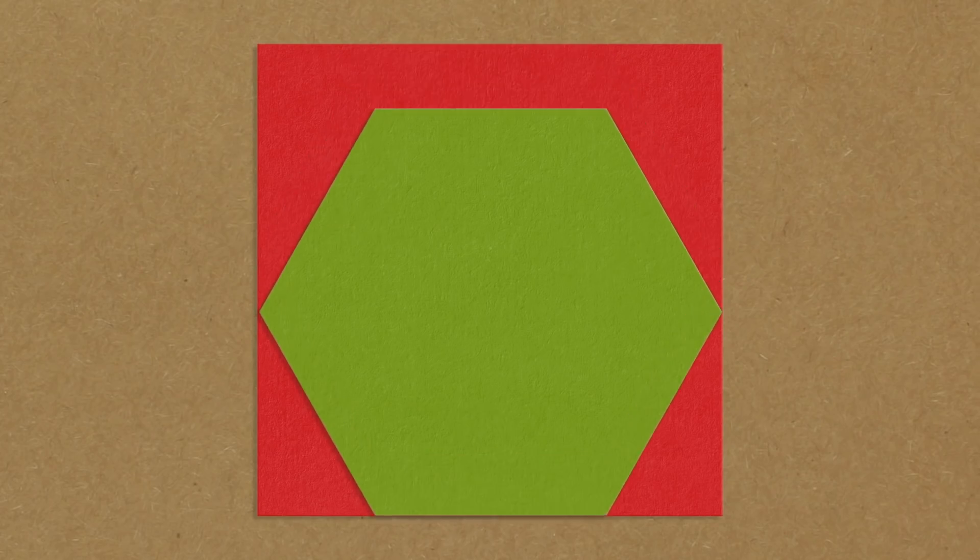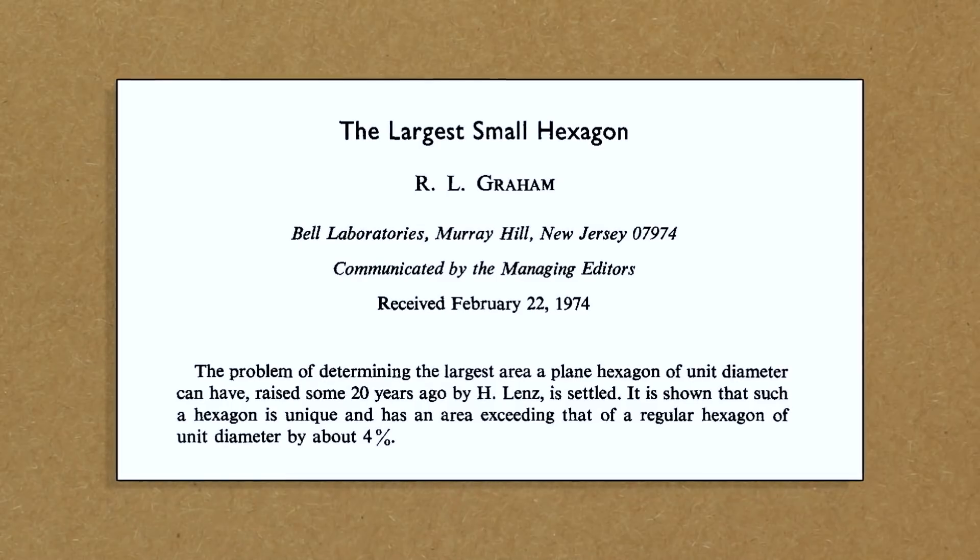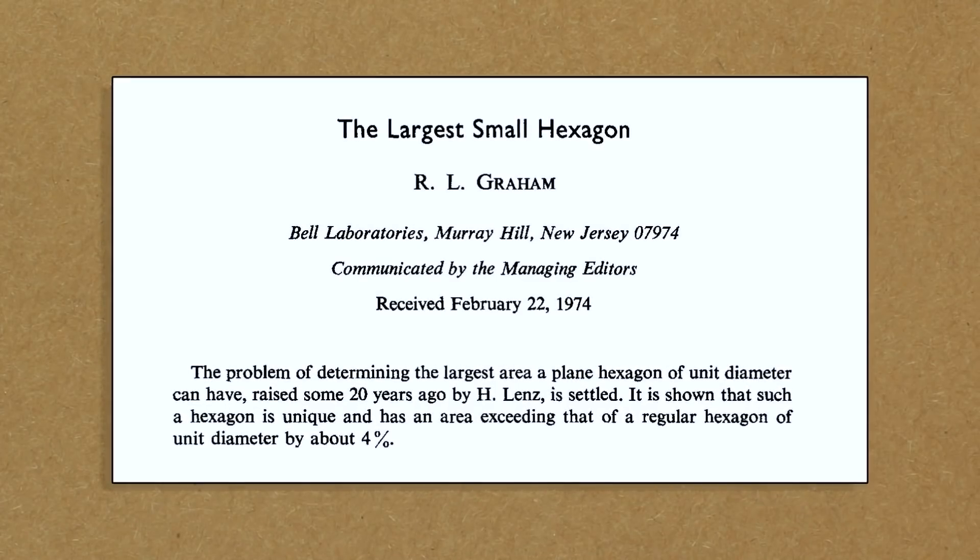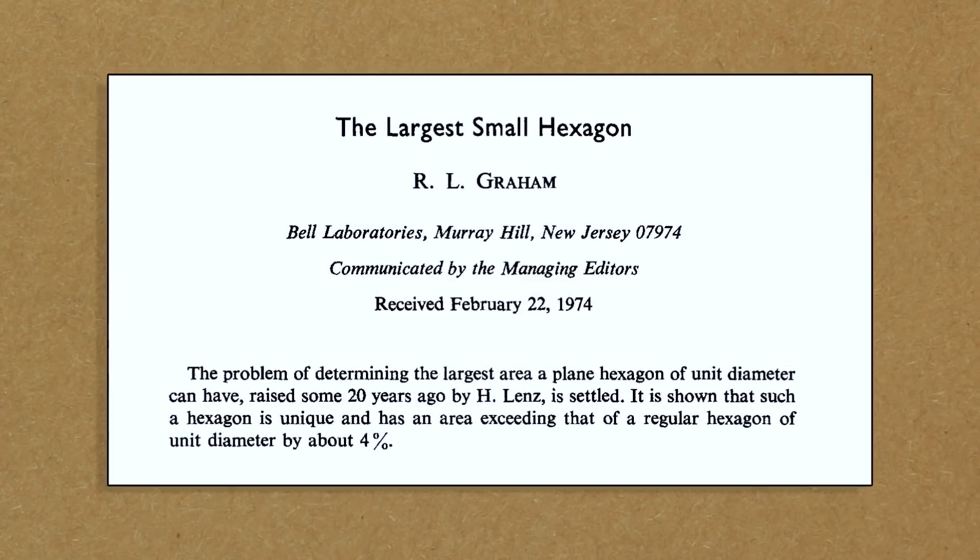What is the largest area if all the diagonals fit inside a one-by-one box? I would have guessed regular hexagon, but it's not. So this is not a regular hexagon — it has a larger area than the regular hexagon by about 4%. And this was discovered in the 1970s by Ron Graham.